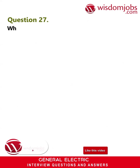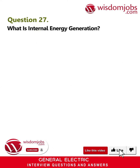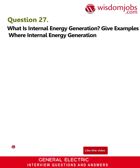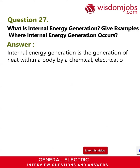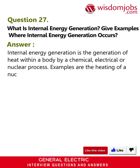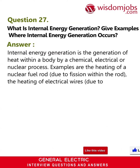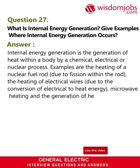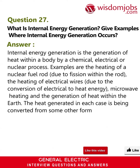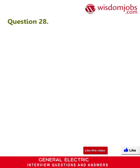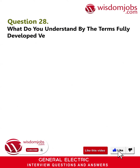Question 27: What is internal energy generation? Give examples where it occurs. Answer: Internal energy generation is the generation of heat within a body by a chemical, electrical, or nuclear process. Examples include the heating of a nuclear fuel rod due to fission within the rod, the heating of electrical wires due to the conversion of electrical energy to heat energy, microwave heating, and the generation of heat within the earth. The heat generated in each case is converted from some other form of energy.